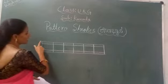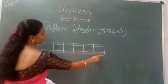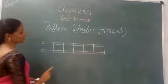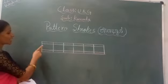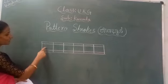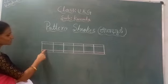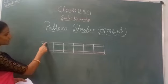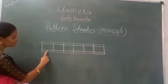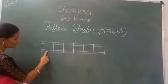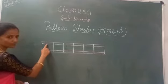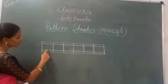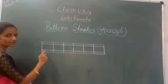Already I have ruled a line here. We have a writing big line. See children? Up one small line, down one small line, and between is the big line. We have to write in the big line.